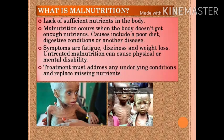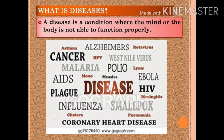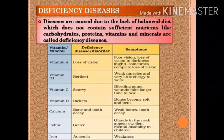Here in the picture you can see the pathetic condition of a child because of malnutrition. Kids, you should eat food which has all the nutrients in the right amount. A disease is a condition where the mind or body is not able to function properly — that means a disability of any body part. Here in the picture you can see the names of many diseases, like cancer, malaria, polio, influenza, and many more. Diseases which are caused due to the lack of a balanced diet — which does not contain sufficient nutrients like carbohydrates, proteins, vitamins, and minerals — are called deficiency diseases.